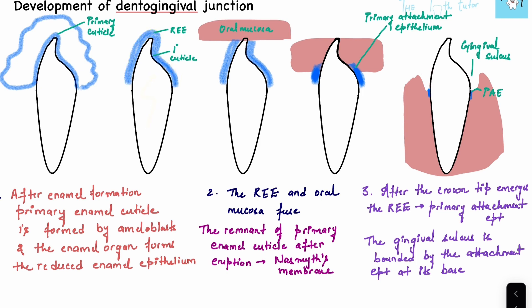The entire enamel organ reduces itself into the reduced enamel epithelium. So two structures are formed: first the primary cuticle, and then the reduced enamel epithelium — both forming a layer over the tooth. The tooth then erupts upward and meets the oral mucosa. When the tip goes into the oral mucosa, it fuses with it. The remnant of the primary enamel cuticle after eruption is called Naismyth's membrane.